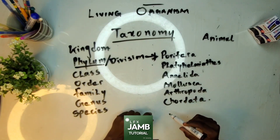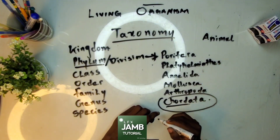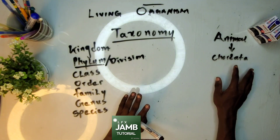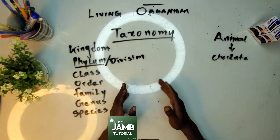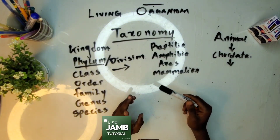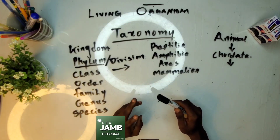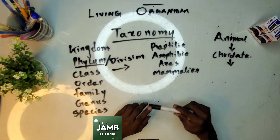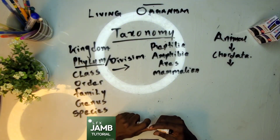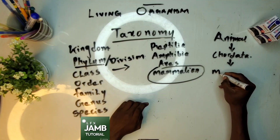Chordata — that's animals with a chord — that's where we fall under, so we highlight Chordata. I want to analyze the classes under Chordata. There are several classes; I will list a few. Under Chordata we have Reptilia, Amphibia, Aves, and Mammalia, among others like Agnatha. Examples: Aves includes birds; Reptilia includes lizards; Amphibia includes frogs. Mammalia — warm-blooded living organisms — that is where we fall under, so we are going for Mammalia next.